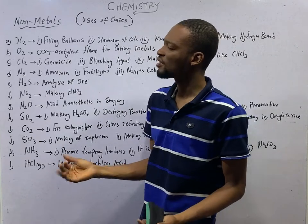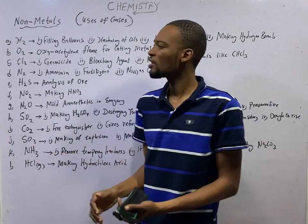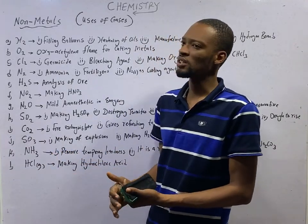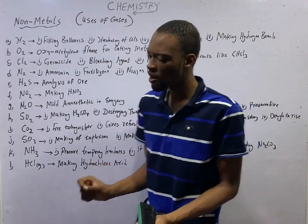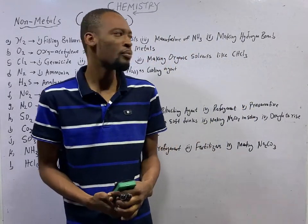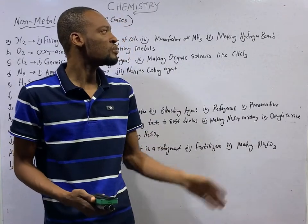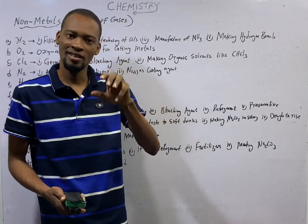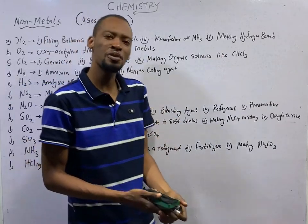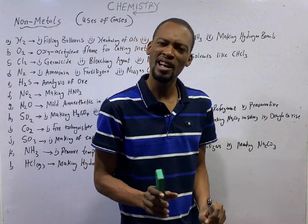Hydrogen is used in filling balloons, hardening of oils (that is in saponification), it is used to manufacture ammonia in the Haber process, and it is used in making hydrogen bombs. I analyzed this under radioactivity, nuclear fusion and application of nuclear fusion.